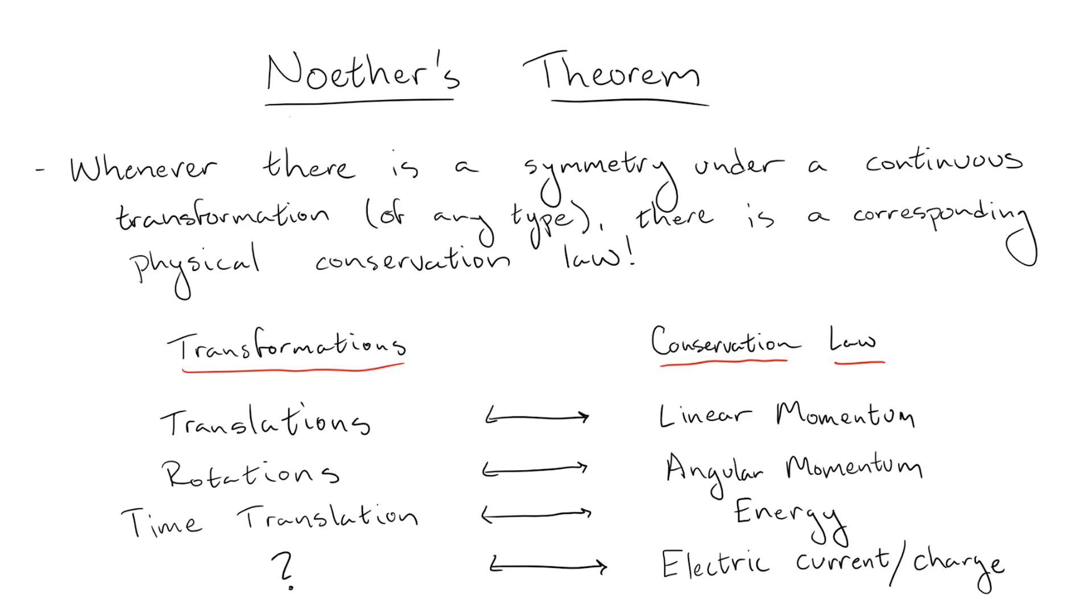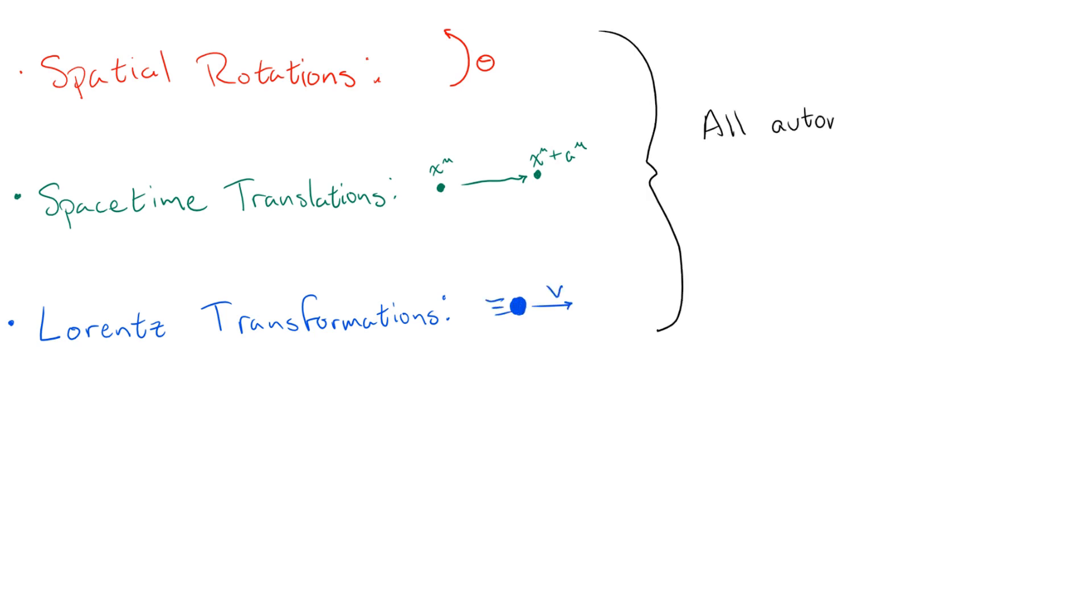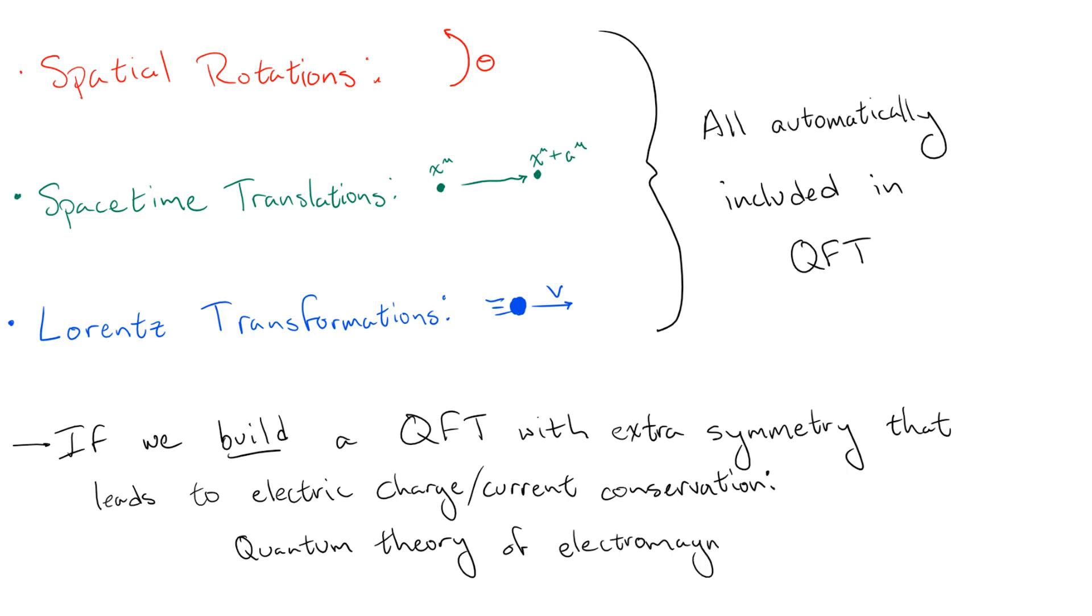This brings us to our first step on the path towards the standard model. The standard model is built from the framework of quantum field theory which automatically has the global external symmetries of special relativity, namely rotations, space-time translations, and Lorentz transformations. So, presumably, if we just build a quantum field theory which has an internal symmetry that reproduces something that looks like conservation of electric charge, this is an excellent candidate for a quantum theory of electromagnetism.